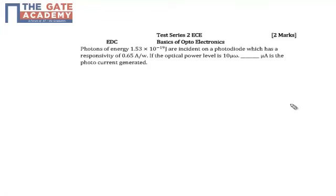it is given that the energy of photons is 1.53 × 10^-19 joules and they are incident on a photodiode which has a responsivity R as 0.65 ampere per watt. If the optical power level is 10 microwatt, then we need to calculate the photocurrent.